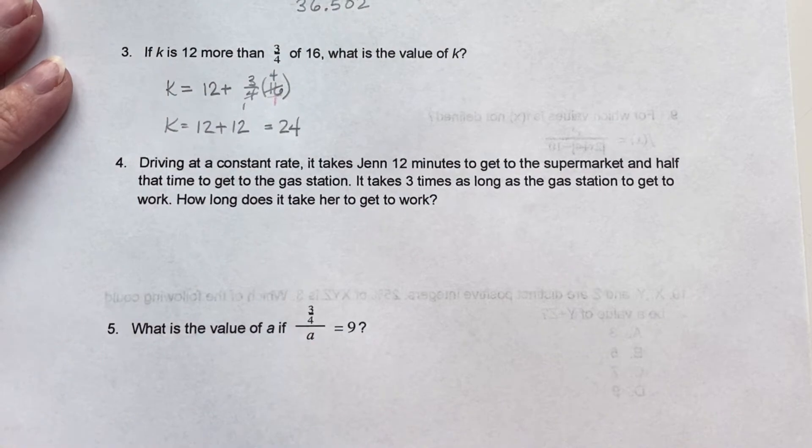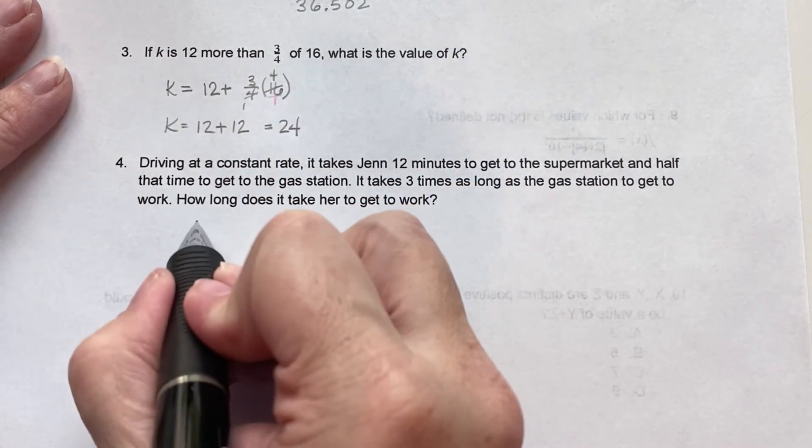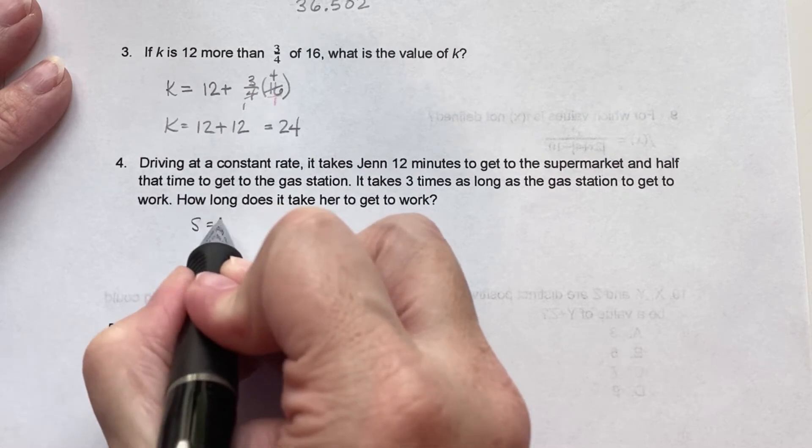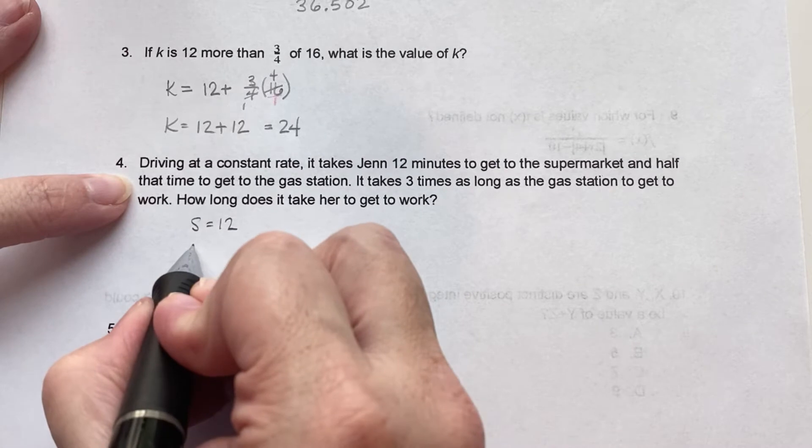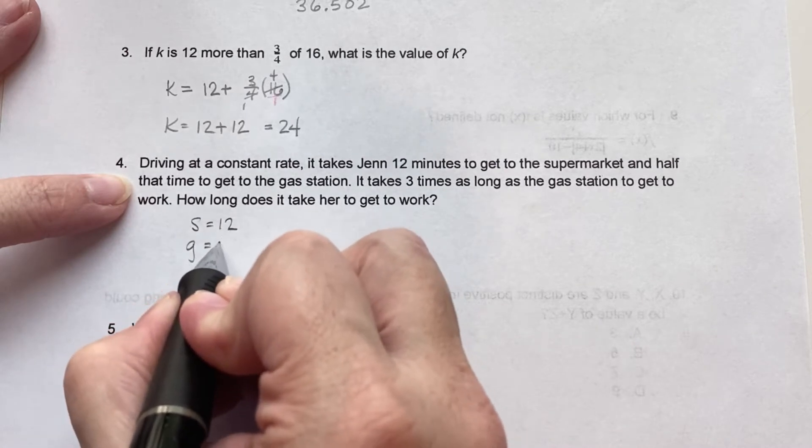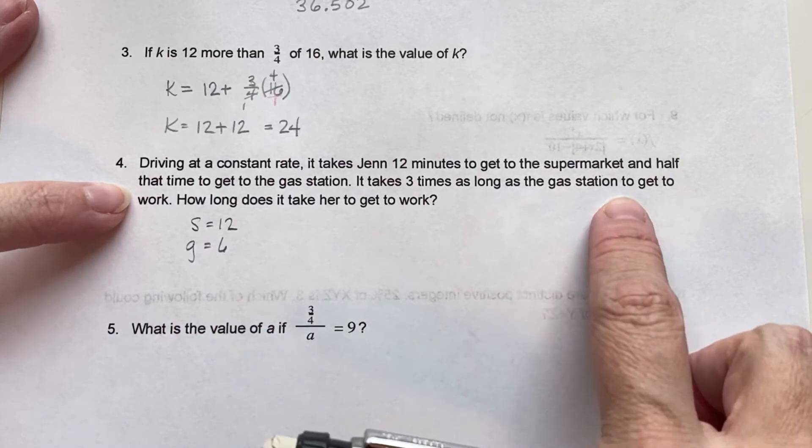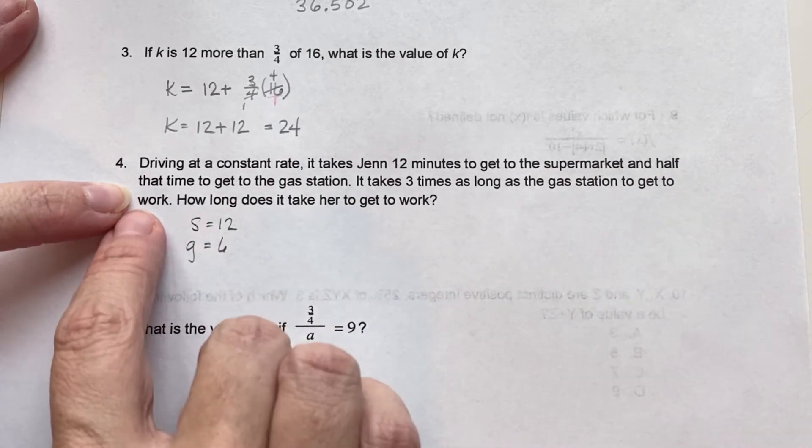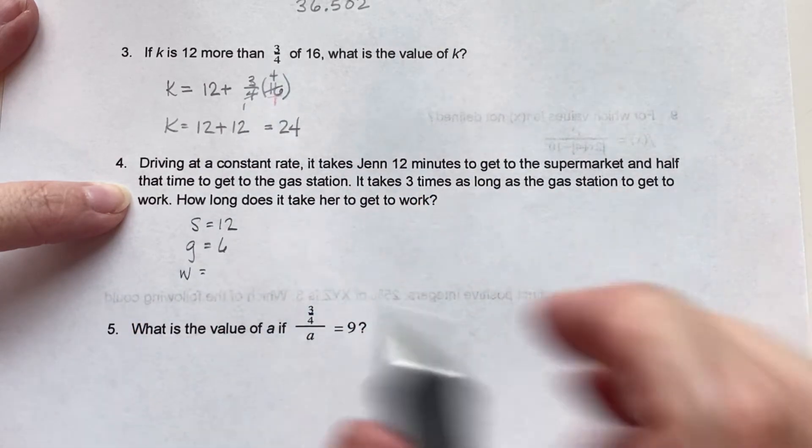Driving at a constant rate, it takes Jen 12 minutes to get to the supermarket. So supermarket equals 12 and half that time to get to the gas station. So gas station, half of 12 is 6. It takes her three times as long as the gas station to get to work.